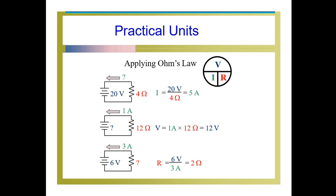Taking a practical example applying Ohm's law: suppose a 20V DC battery and a 4 Ohm resistance are given, and we want to calculate the current flowing through the circuit. We use the equation I equal to V by R. V is 20, R is 4, so 20 divided by 4 gives us 5 Ampere. So 5 Ampere current is flowing through the circuit.